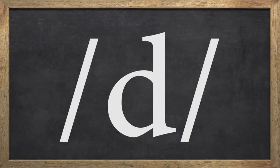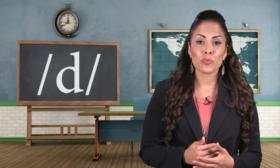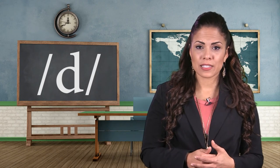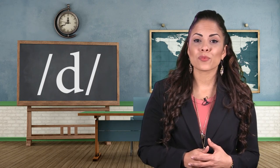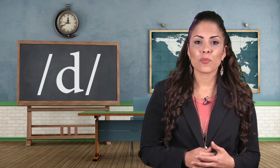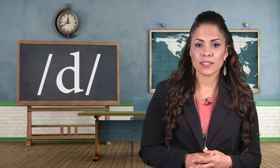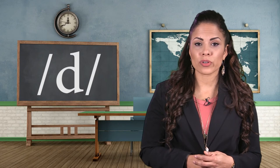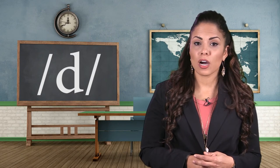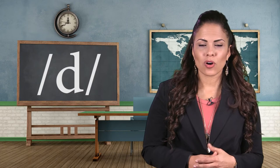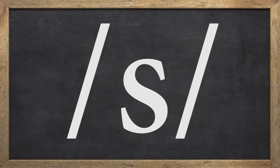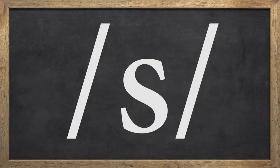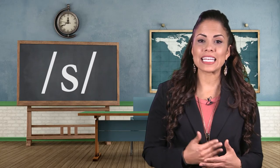To produce the next alveolar sound /d/, the tip of your tongue needs to be firmly pressed against the gum ridge which holds your upper teeth. Your vocal folds will vibrate during /d/. Words like dime, dinner, adorn, adore, odd, and blood all have the /d/ sound.